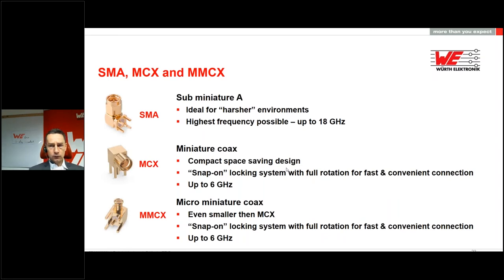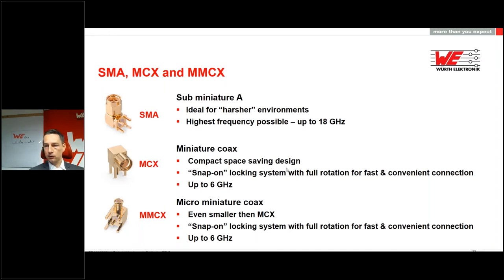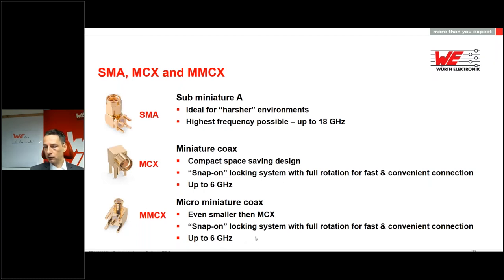Comparing SMA to MCX and MMCX: SMA is the larger connector with the most stable mechanical locking, better for harsher environments and with the highest frequency range. MCX is a more space-saving design — smaller with a comfortable snap-on locking system where the cable can rotate, making it easy to plug and unplug, but it is limited to 6 GHz. MCX can be found, for example, in DVB-T sticks and computer accessories. MMCX, or microminiature coax, is even smaller than MCX, also has the snap-on locking system and a frequency range up to 6 GHz, and is common in PCMCIA cards.